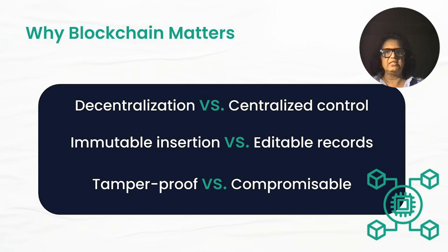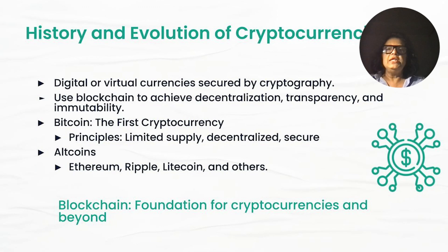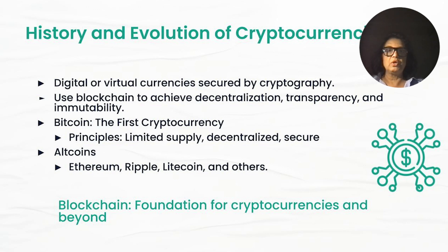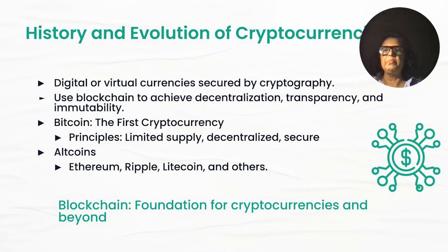The innovation that has happened since then — smart contracts — has revolutionized how we transact with each other. Once the contract is written, it's automatically implemented; you don't need third parties. The cryptocurrency Bitcoin started out as the first cryptocurrency implementation of blockchain, built on principles of limited supply, decentralization, and security. With Bitcoin's success came altcoins, with protocols like Ethereum, Ripple, Litecoin, Solana, and many others. Blockchain is the foundation and underlying technology for cryptocurrencies, along with cryptography.